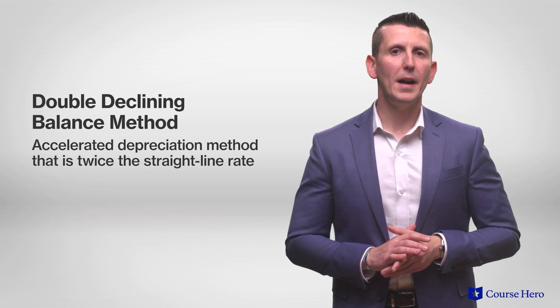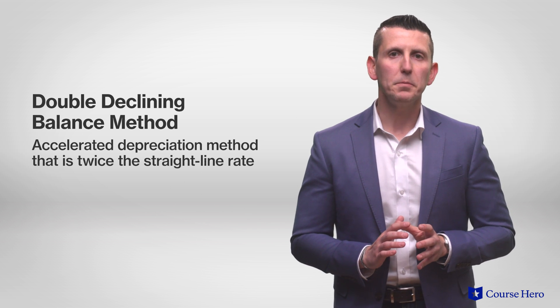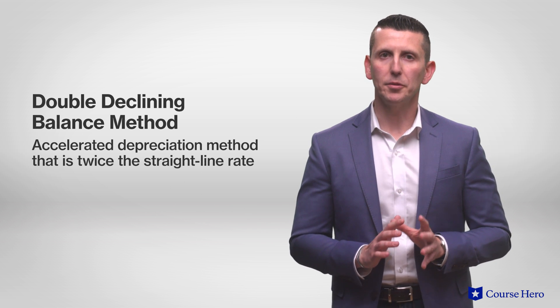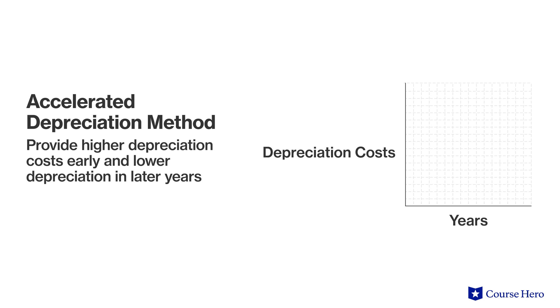The double declining balance method is an accelerated depreciation method that is twice the straight line rate. Keep in mind that twice the straight line rate does not always mean twice the straight line amount, because the rate is a percentage while the amount is a dollar figure. An accelerated depreciation method provides higher depreciation costs early in the life of an asset when repairs and maintenance are often low, and lower depreciation in later years. Unlike other methods, the double declining balance method does not consider the residual value when computing depreciation.